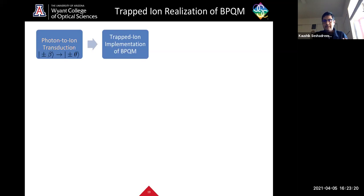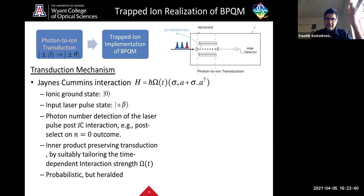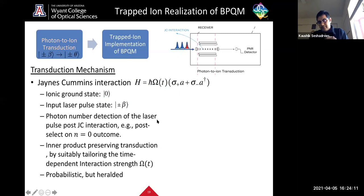Now for the trap-ion realization of this BPQM receiver. A theoretical transduction mechanism maps information from incoming optical pulses — received from a deep space communication channel — onto the trap-ion domain, after which the joint detection receiver, a structured quantum circuit in terms of CNOT gates and single-qubit gates, can be implemented on a trapped-ion quantum computer. We give a theoretical transduction mechanism and present an experimental realization of the circuit on Honeywell's trapped-ion processor.